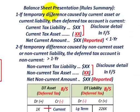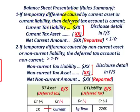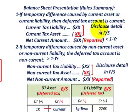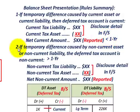Here's a summary of the balance sheet presentation rules. Rule one: if the temporary difference is caused by a current asset or current liability, then the deferred tax account is current. You net out current tax liabilities against current tax assets, and the net current amount is what you report. Rule two: if the temporary difference is caused by a non-current asset or non-current liability, then the deferred tax account is non-current — greater than one year.